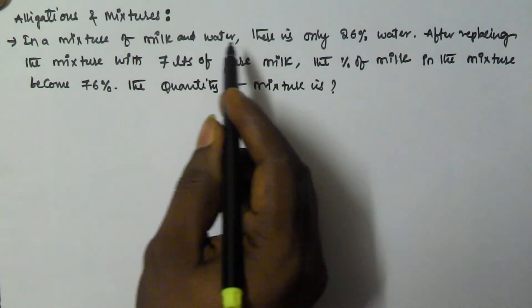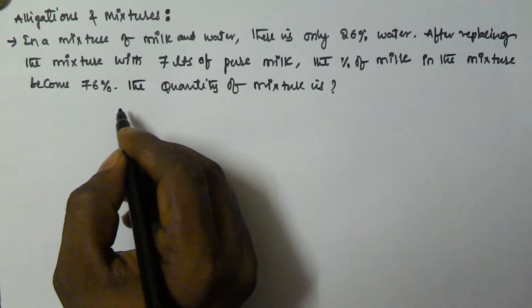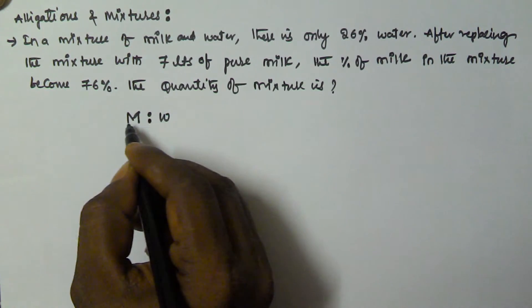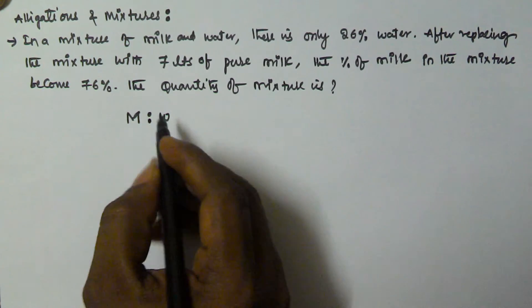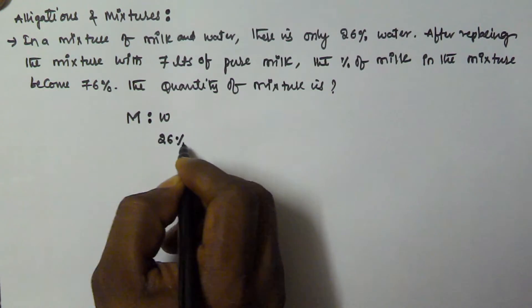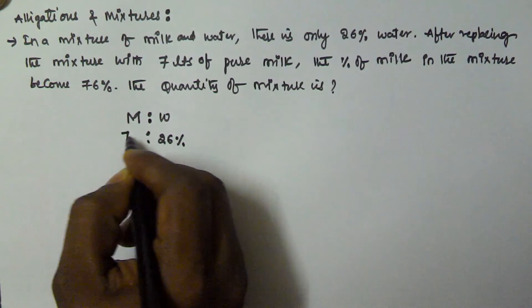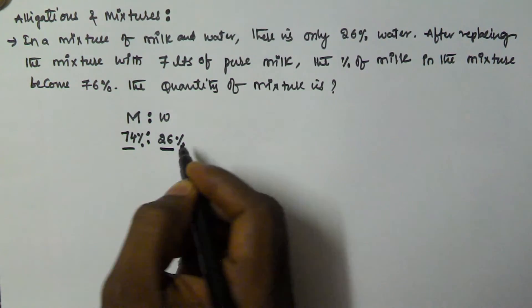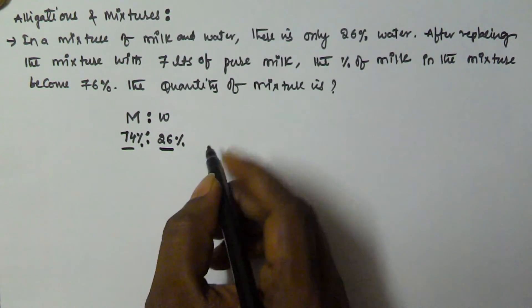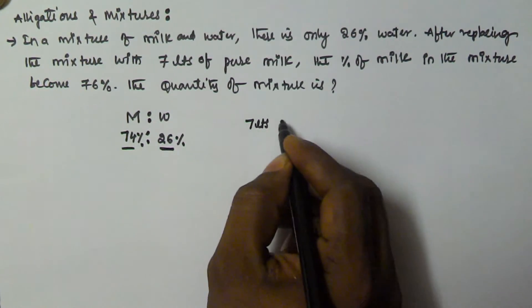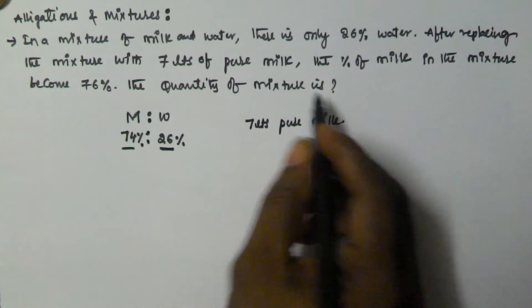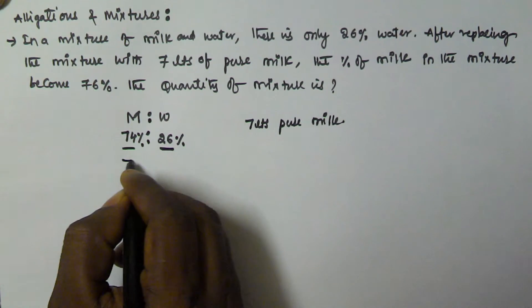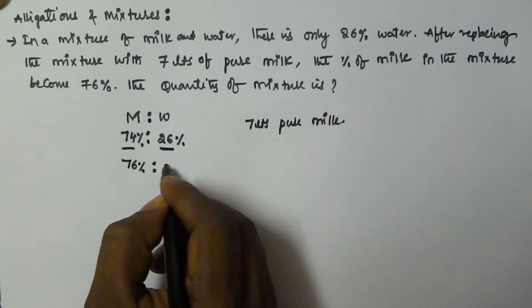So in a mixture of milk and water, there is only 26% water initially. That means milk is 74% and water is 26%. After replacing the mixture with 7 liters of pure milk, the percentage of milk becomes 76%, and water becomes 24%.